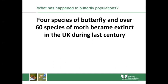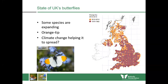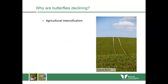Our populations are struggling though — four species of butterfly and over 60 species of moth have become extinct in the UK during the last century. Our 2015 report found that three quarters of our butterfly species had declined in their range or abundance over the past 40 years. Some species are expanding however, like the orange tip, possibly because climate change is helping some species move northward.